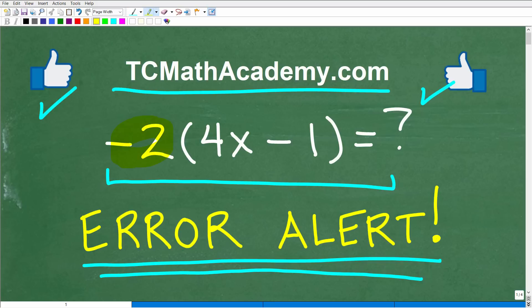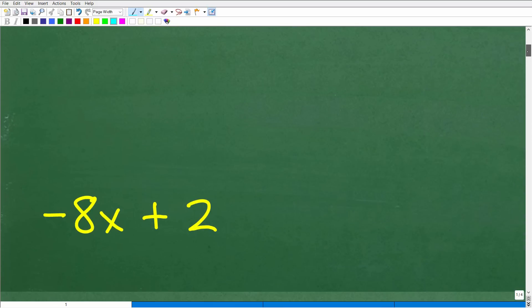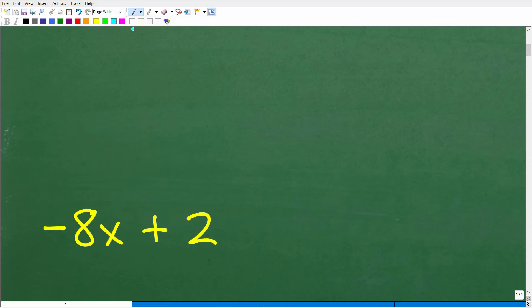Okay, so again, we have negative 2 and we're multiplying it by 4x minus 1. What is this equal to? Well, let's go ahead and take a look at the answer. So the answer is negative 8x plus 2.